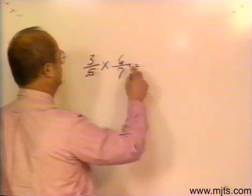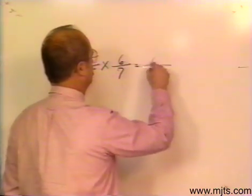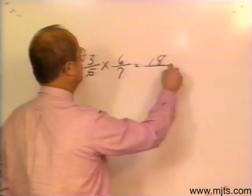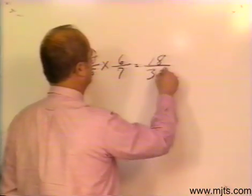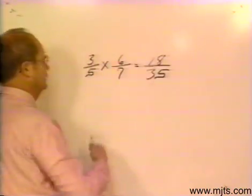Here you see I would take 3 times 6 for 18, 5 times 7 for 35. This would be my answer.